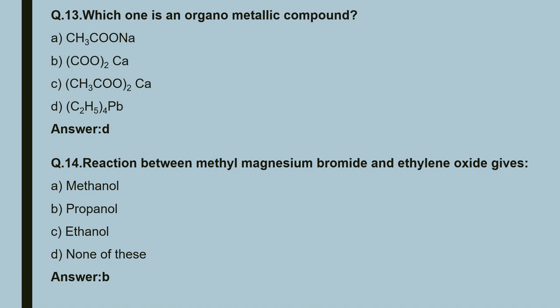Question 14: reaction of methyl magnesium bromide with ethylene oxide gives — it produces propanol. The correct answer is B.